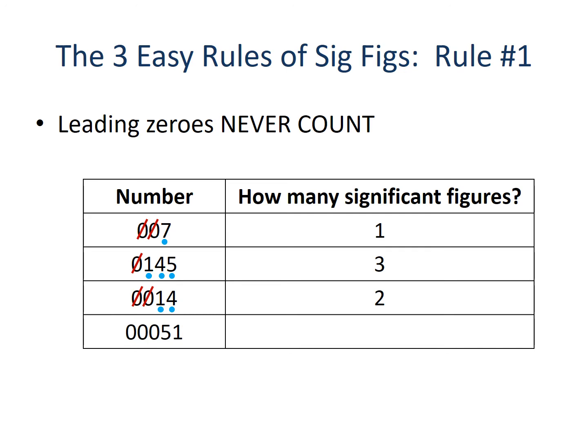In our last rule-one example, we have 00051. Rule number one says leading zeros never count, so we say bye-bye to the first three zeros, leaving us with the five and the one. That gives us a number with only two significant figures. Rule number one: leading zeros never count.